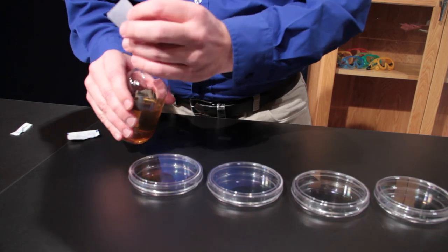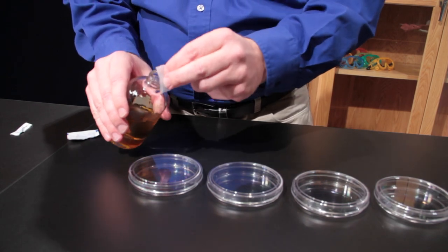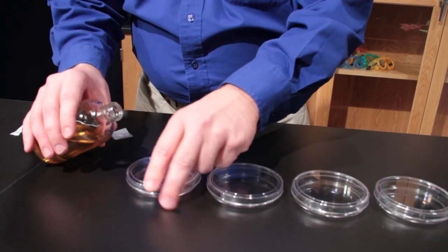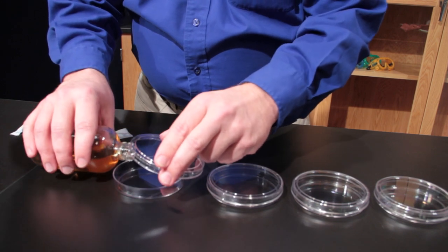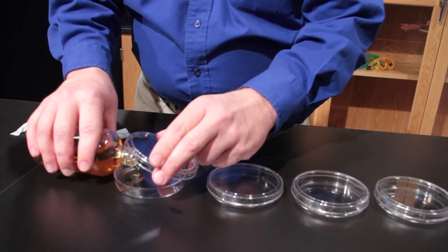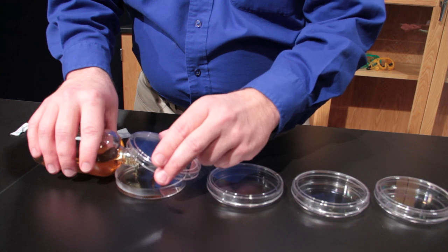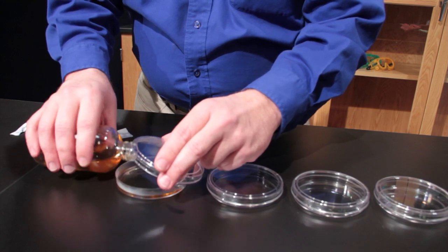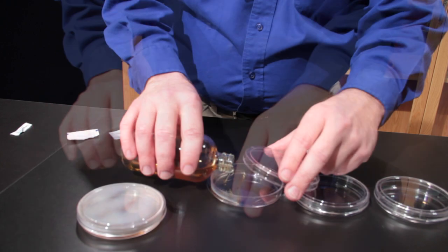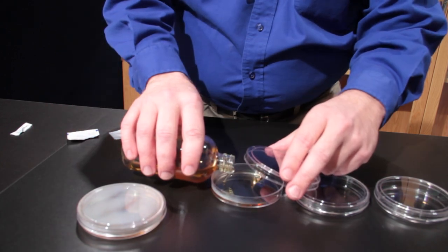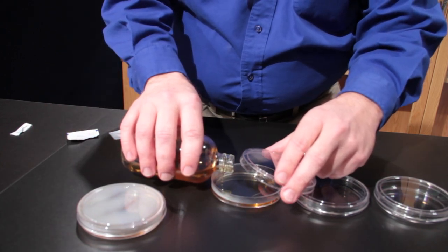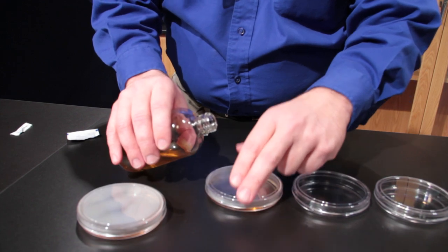Flame the mouth of the bottle with a Bunsen burner or wipe it with an alcohol pad. Keep the bottle at an angle at all times to prevent contamination while pouring. Lift the lid just enough to pour the plate. Pour just enough to cover the bottom of the plate, then replace the lid. One bottle should pour four to five standard plates.